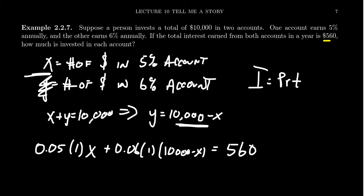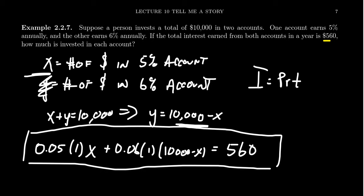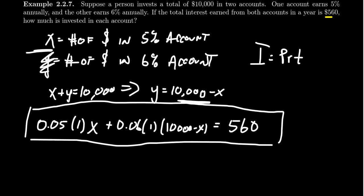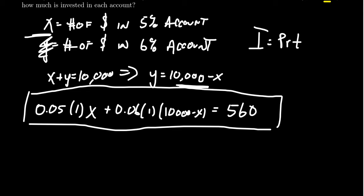So this equation right here then tells us how much money. Well, this gives us an equation of interest. And if we solve for X, which is a linear equation, we can then find out how much was invested in the 5% account.